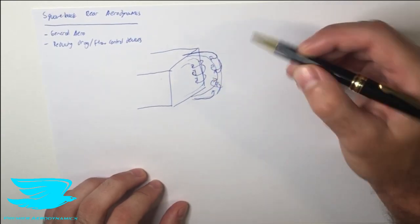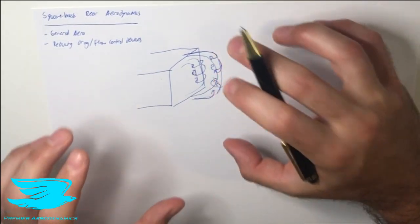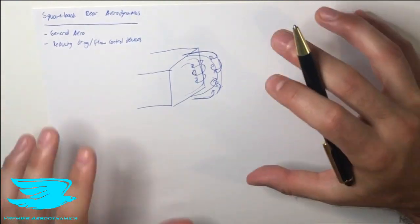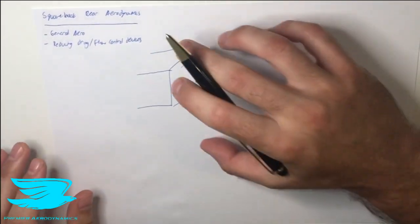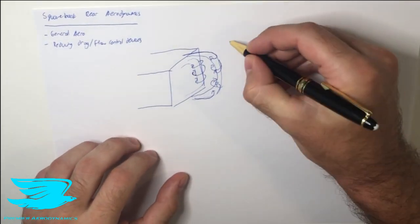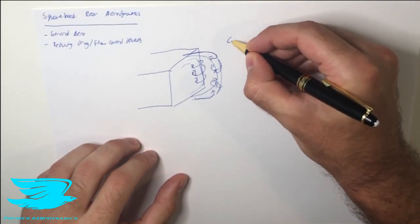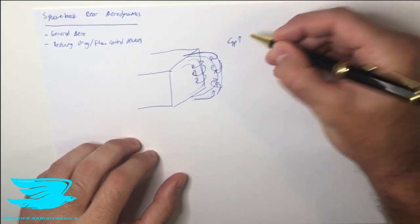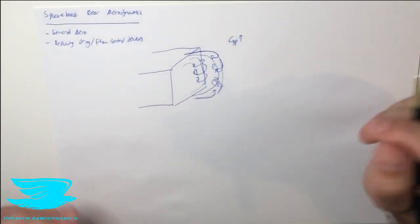Now vortices in general in the rear are usually quite bad for aerodynamics and this is no exception. So here we have a lot of low pressure on this rear face which means that the pressure drag and the profile drag in total goes up. Obviously that's not good for a car.